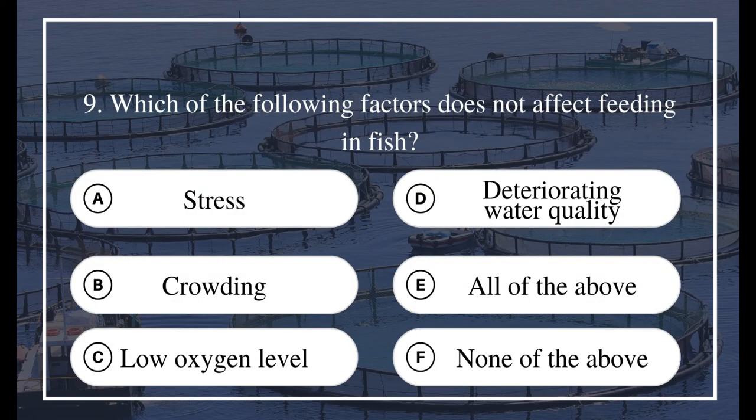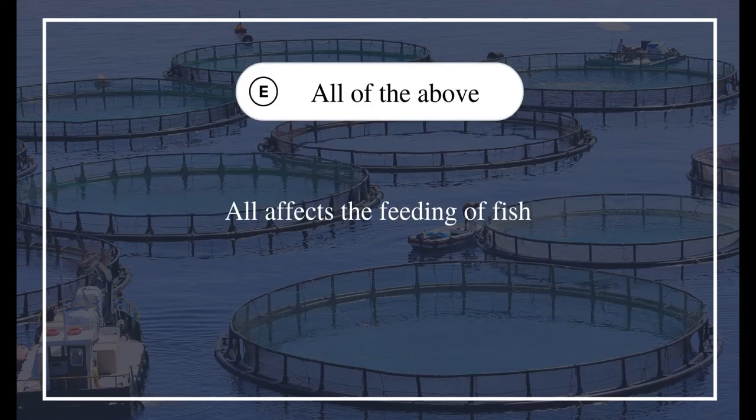Thus, young fish have to eat more frequently as they empty their stomachs faster than old fish. Question 9: Which of the following factors does NOT affect feeding in fish? A) stress, B) crowding, C) low oxygen level, D) deteriorating water quality, E) all of the above, F) none of the above. The answer is E) all of the above — all of these factors affect the feeding of fish.